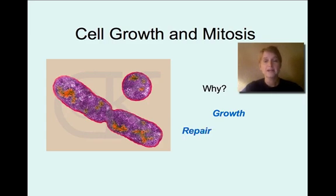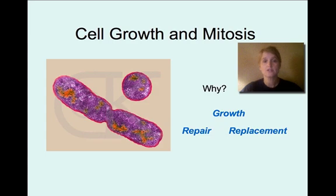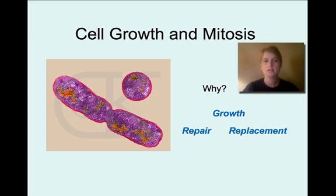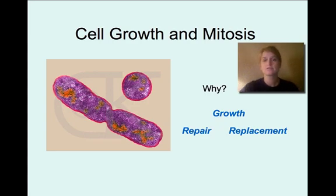Another reason is repair and replacement. If you get a cut, your body has to repair that, and it does so by doing cell division — it makes new cells to repair that. If a cell has been cut in half and it's not going to work anymore, the body doesn't repair that cell; it just replaces it. Our bodies repair cuts and injuries by replacing those cells.